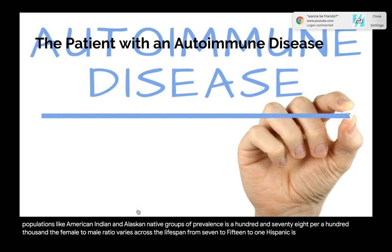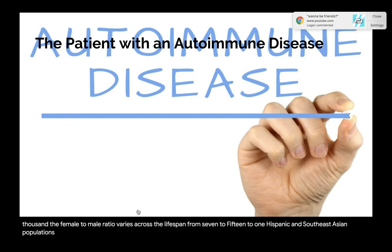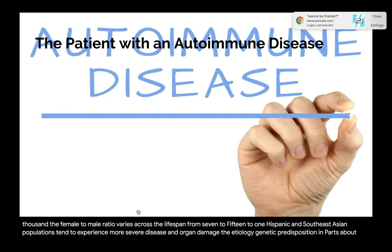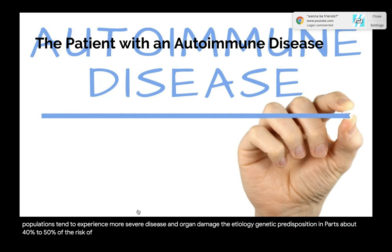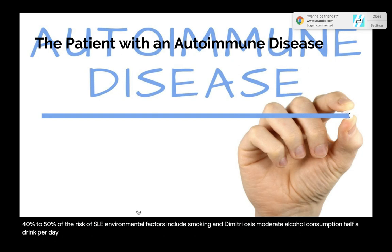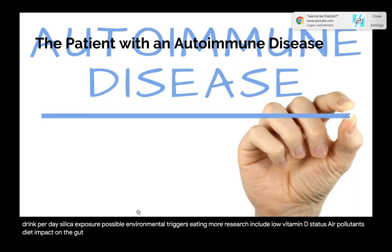Etiology of SLE: genetic predisposition accounts for about 40–50% of the risk. Environmental factors include smoking, endometriosis, moderate alcohol consumption (more than 5 grams or half a drink per day), and silica exposure. Possible environmental triggers requiring more research include low vitamin D status, air pollutants, diet impact on the gut microbiome, and infectious agents such as Epstein-Barr virus.